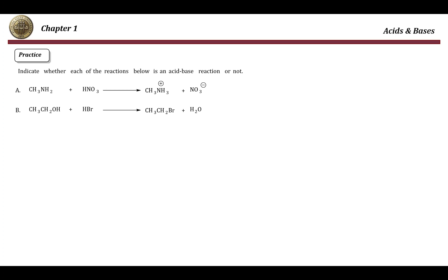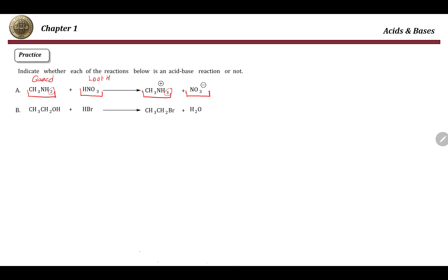Here are two more examples. Comparing the structure of CH3NH2 before and after, I can see that this compound actually gained a hydrogen — so we have three hydrogens instead of two. HNO3 became NO3 minus, which indicates that this compound lost a hydrogen. So again we have a proton transfer process: HNO3 lost one hydrogen and CH3NH2 gained one hydrogen. This is a proton exchange process, and therefore this is an acid-base reaction.